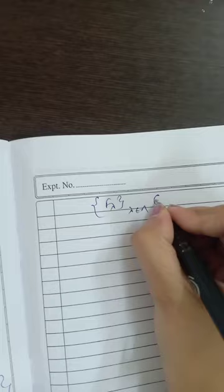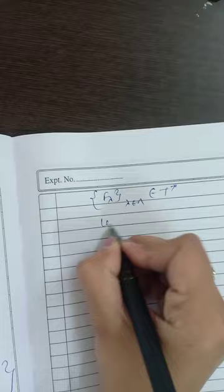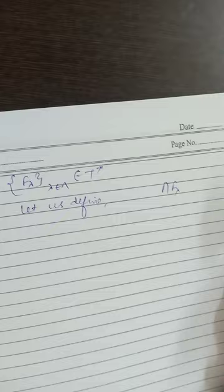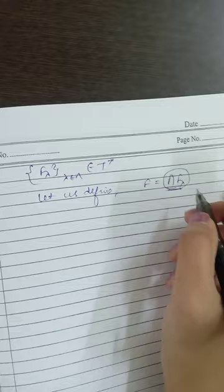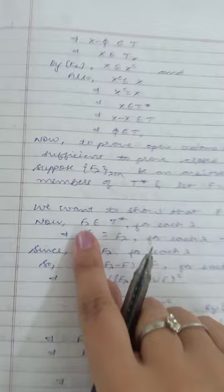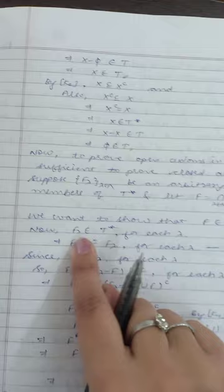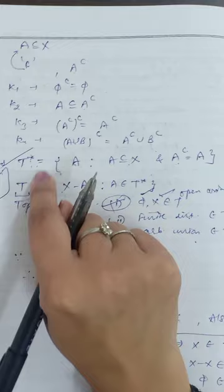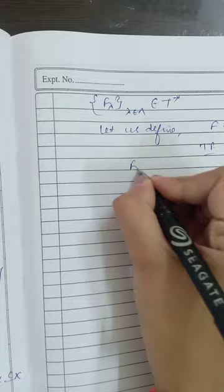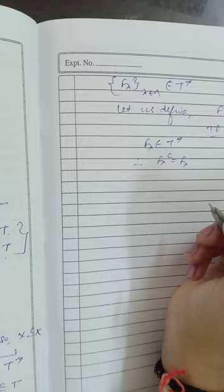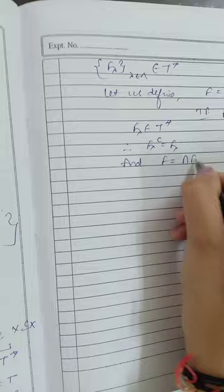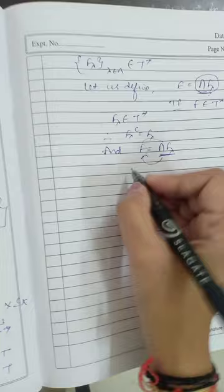These are arbitrary members of T*. Let F denote the intersection of this arbitrary family. We need to prove that F belongs to T*. Since each F_λ belongs to T*, we have F_λ-Kuratowski equals F_λ for each λ. Also, F is the intersection of all F_λ, so F is a subset of F_λ for each λ.